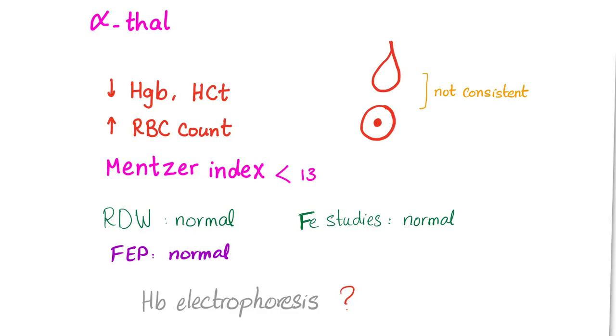Lab results in alpha thalassemia: Thalassemia is anemia, so low hemoglobin and hematocrit. However, in thalassemia RBC count is increased. Why? Nobody knows. Mentzer index is less than 13. What's the Mentzer index? You have to go to the previous video.